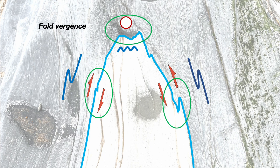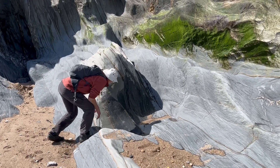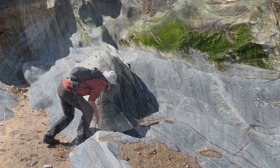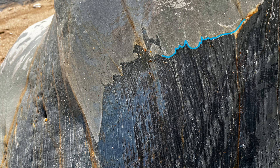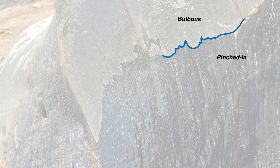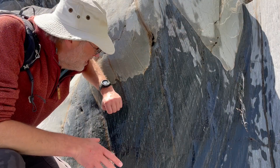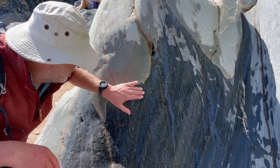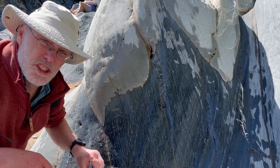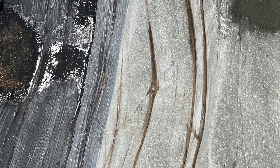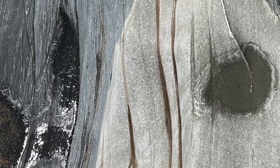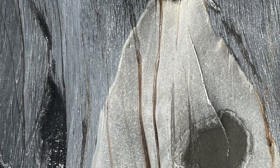Let's now look at another folded sandstone bed. The interface here is quite irregular. It displays bulbous, cuspate and pinched-in forms, and these relate to the rocks on either side of the interface. The sandstone shows more cuspate forms, so it's behaving more competently than the finer-grained dark pelitic rocks below. It's a really nice illustration of how a competence contrast controls the nature of the interface during buckling. The folding and cleavage fabrics look to relate simply to one another in classical fashion.